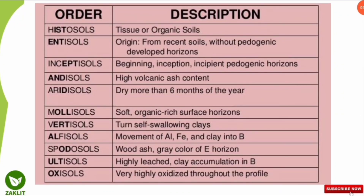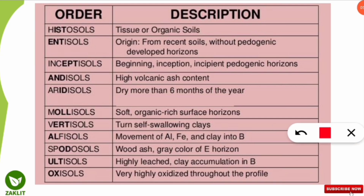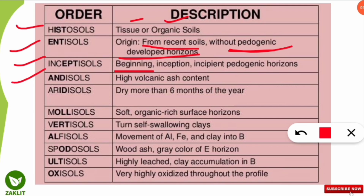I have provided a table here so it will be easier to learn. Kindly note down these very important points. Histosols are also called tissue or organic soils. Entisols are recent soils without pedogenic development horizons — pedogenesis meaning the development of soil. Inceptisols represent the beginning of soil horizon development. Andisols are high in volcanic ash content — very important. Aridisols come from the word 'arid,' meaning water-deficient — they are dry soils for more than six months of the year.